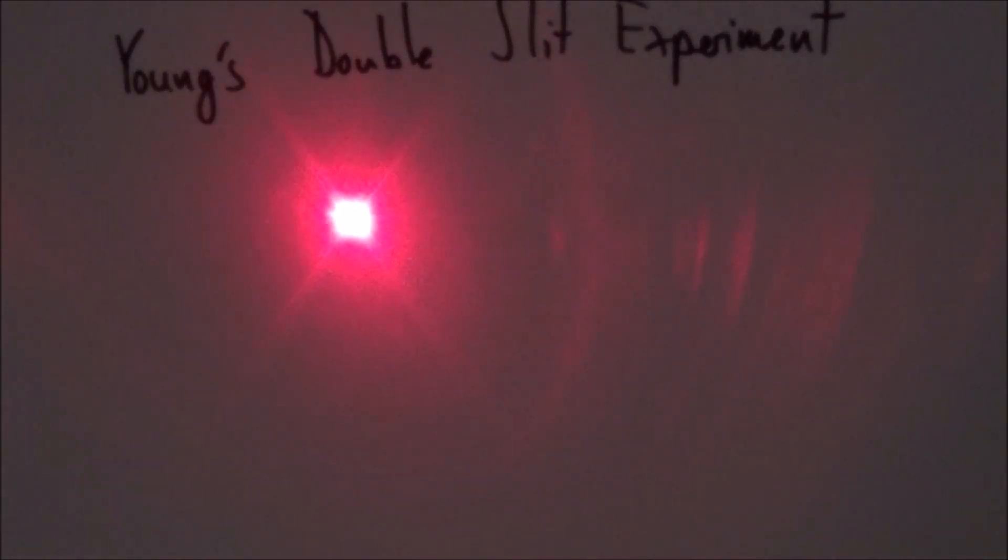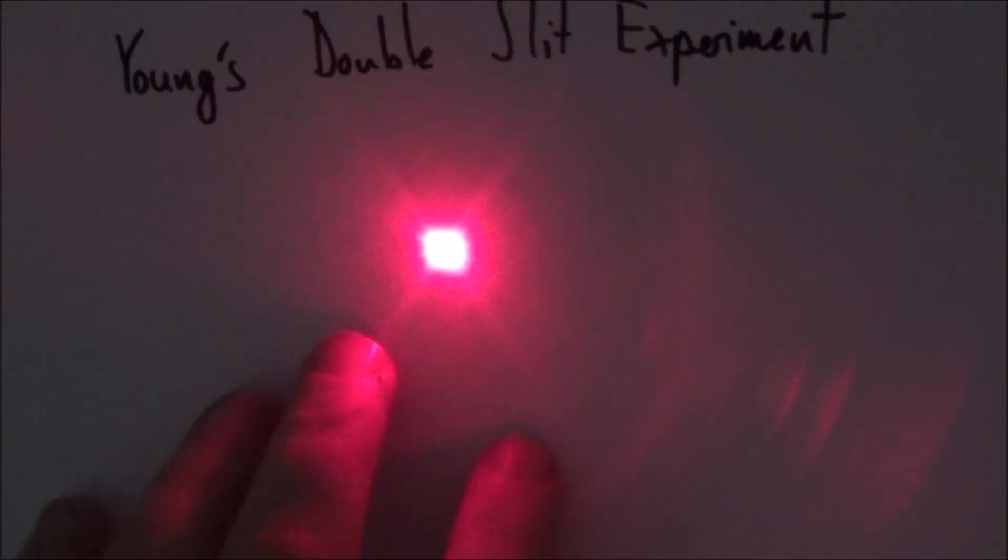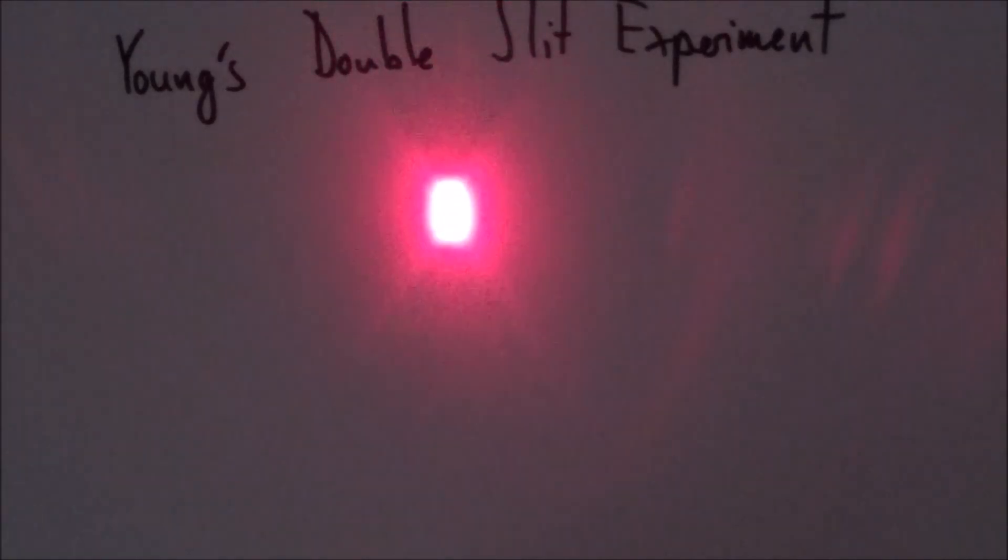If I have it without that double slit, it just tends to form a fairly bright point in the middle with no other effects. So we're going to look at that now as we do Young's double slit experiment that he first performed in 1801.